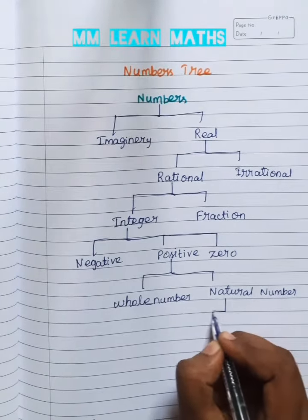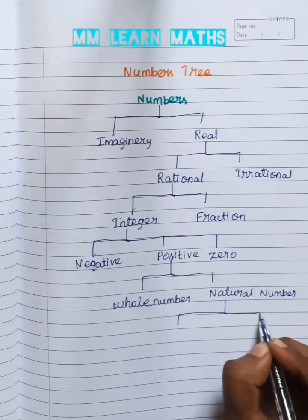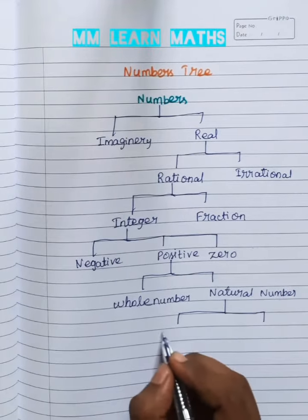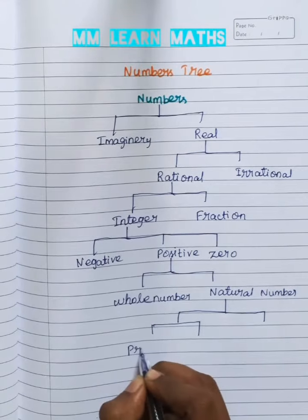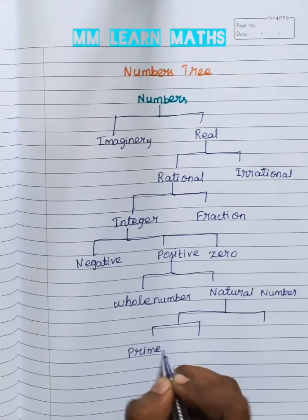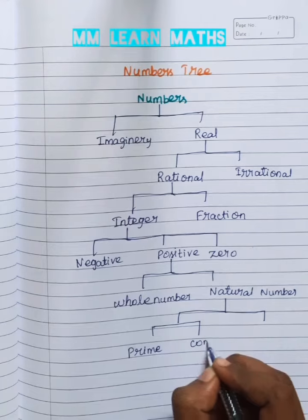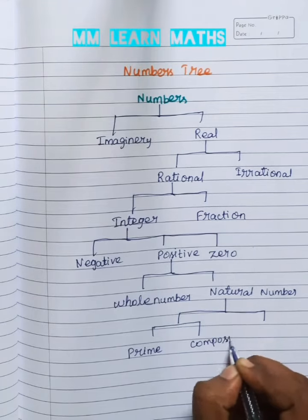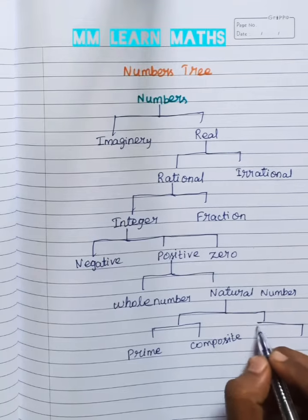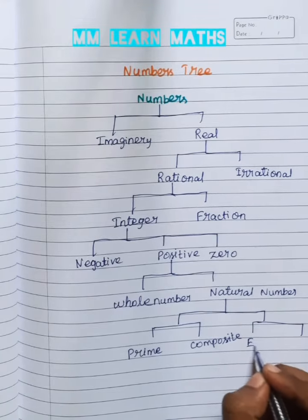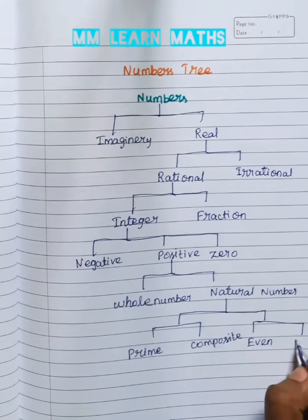Natural numbers we are dividing four type. Prime numbers. Composite numbers. Even number. Odd number.